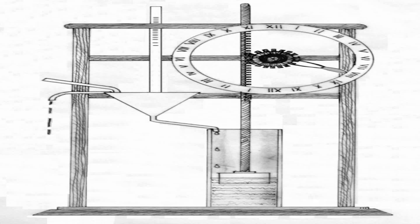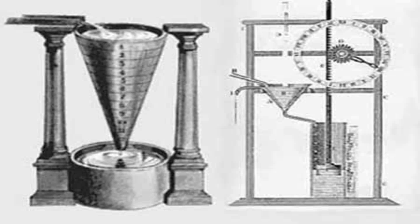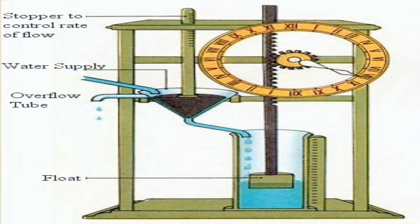Hello and welcome to another episode of Ancient Inventions, where we explore the amazing creations of ancient civilizations. Today we are going to talk about the flow-type klepsidra, or water clock, invented by Ctesibius of Alexandria in Greece in the 3rd century BC.